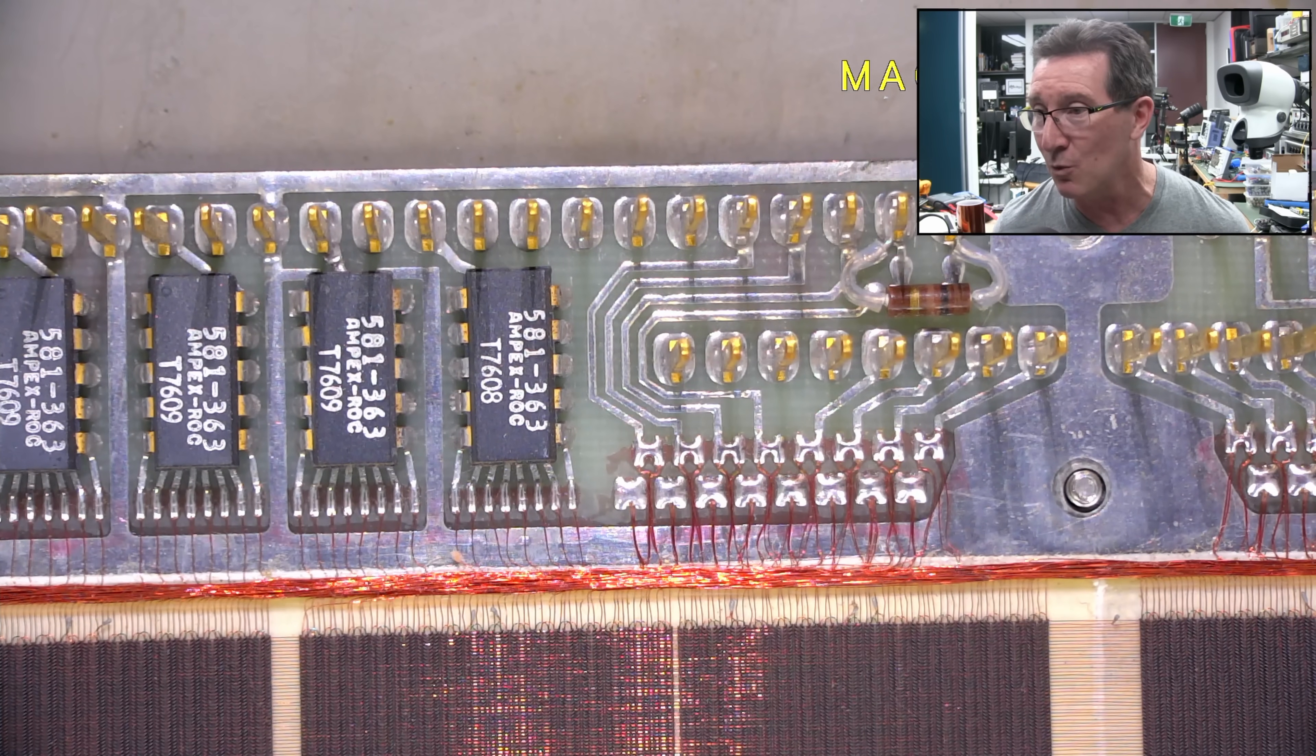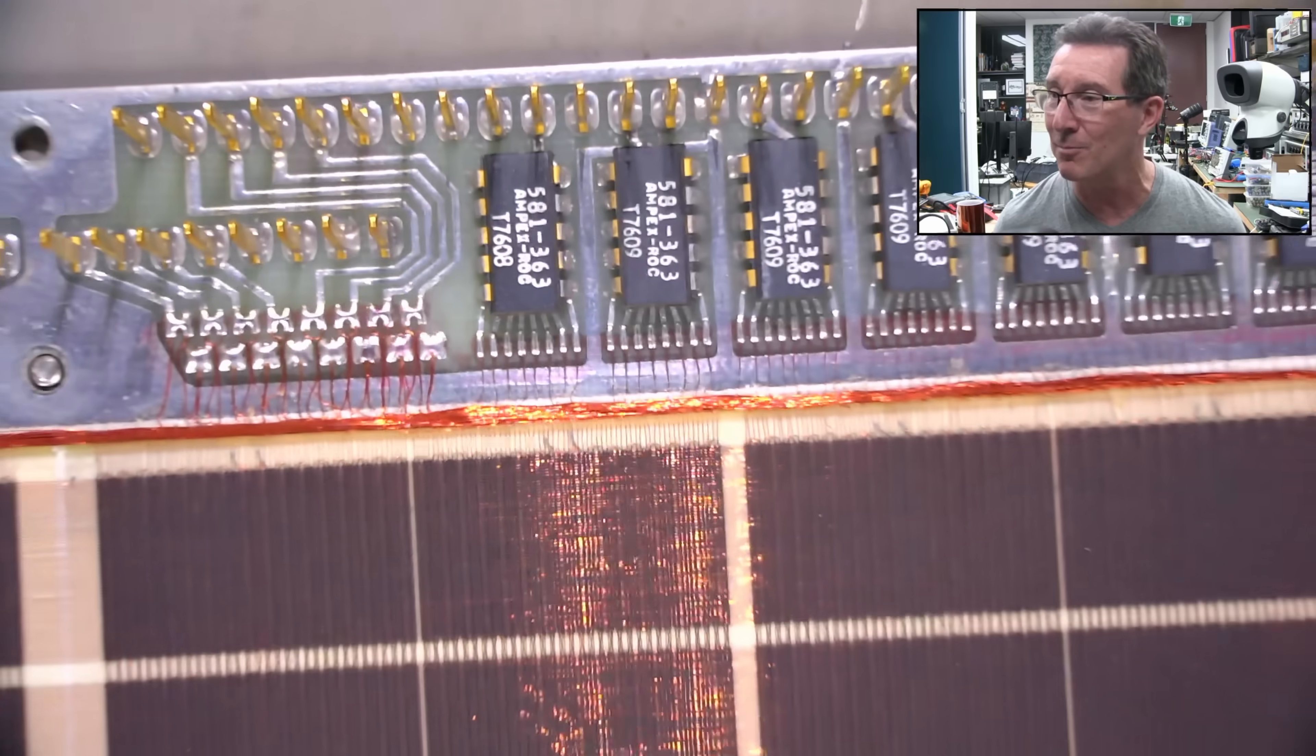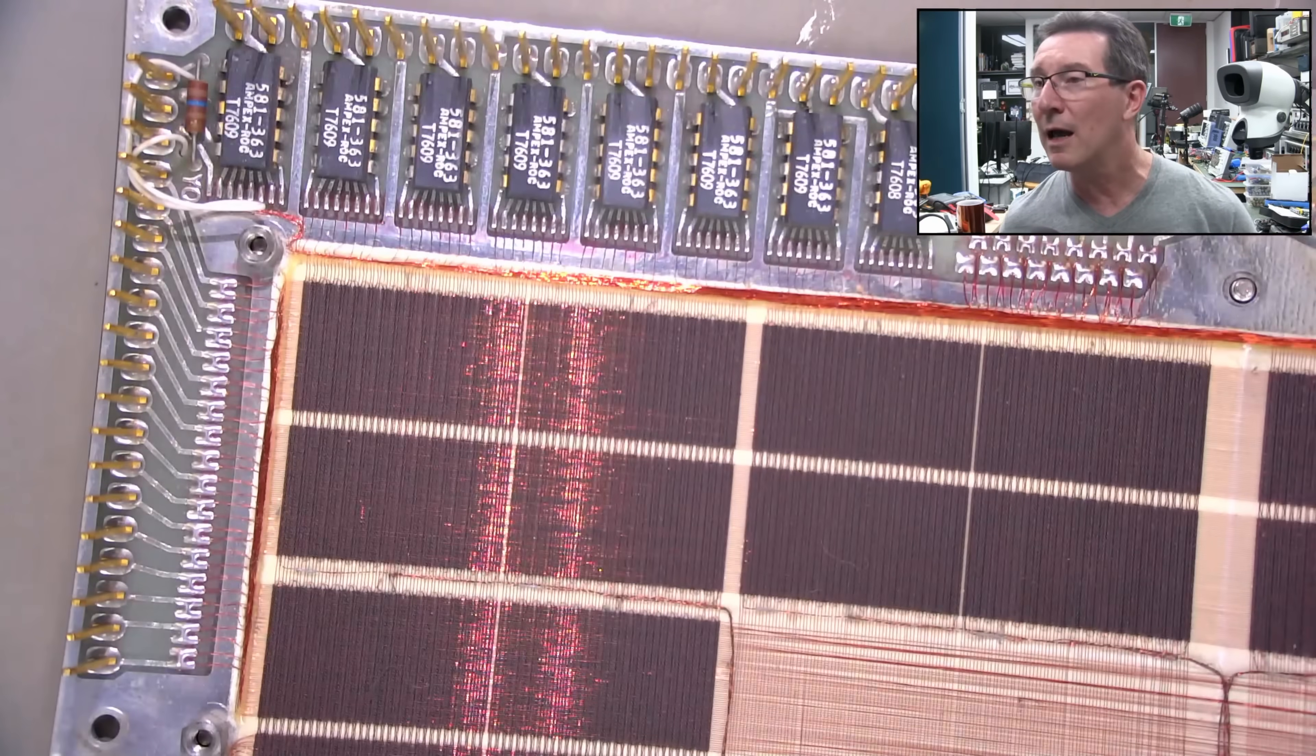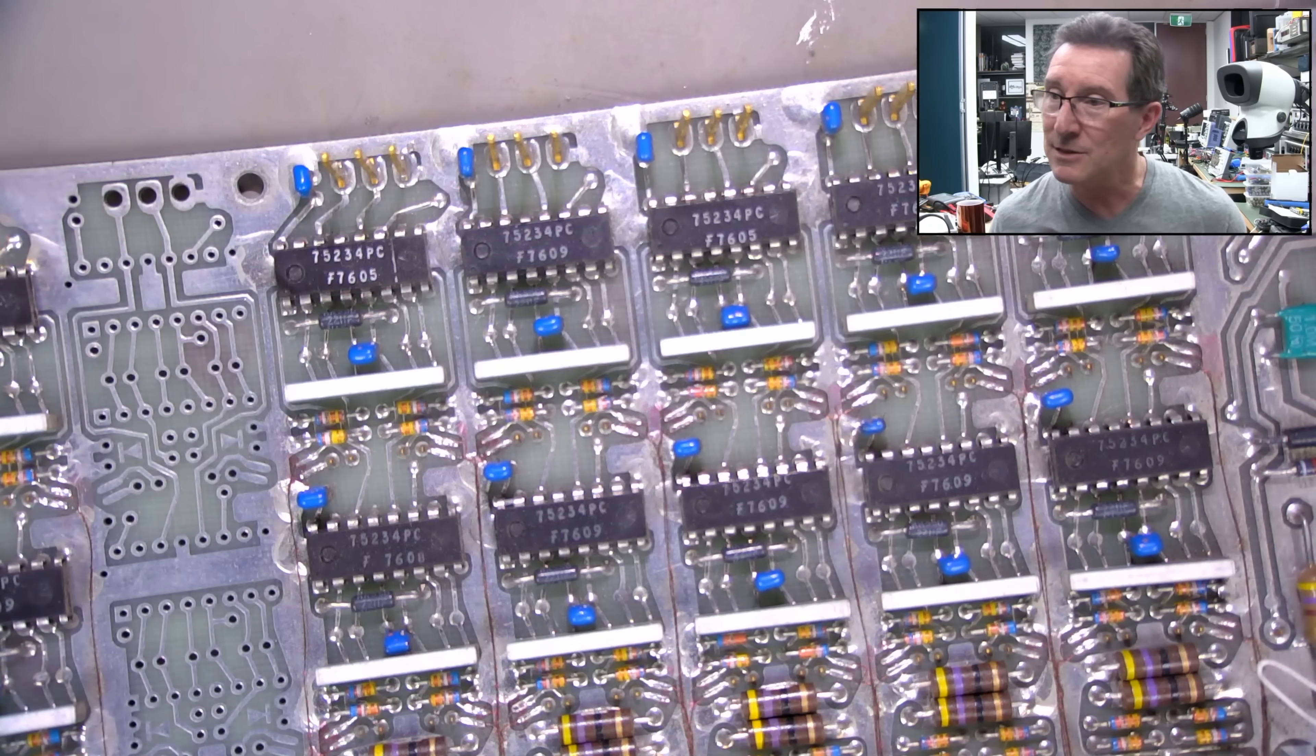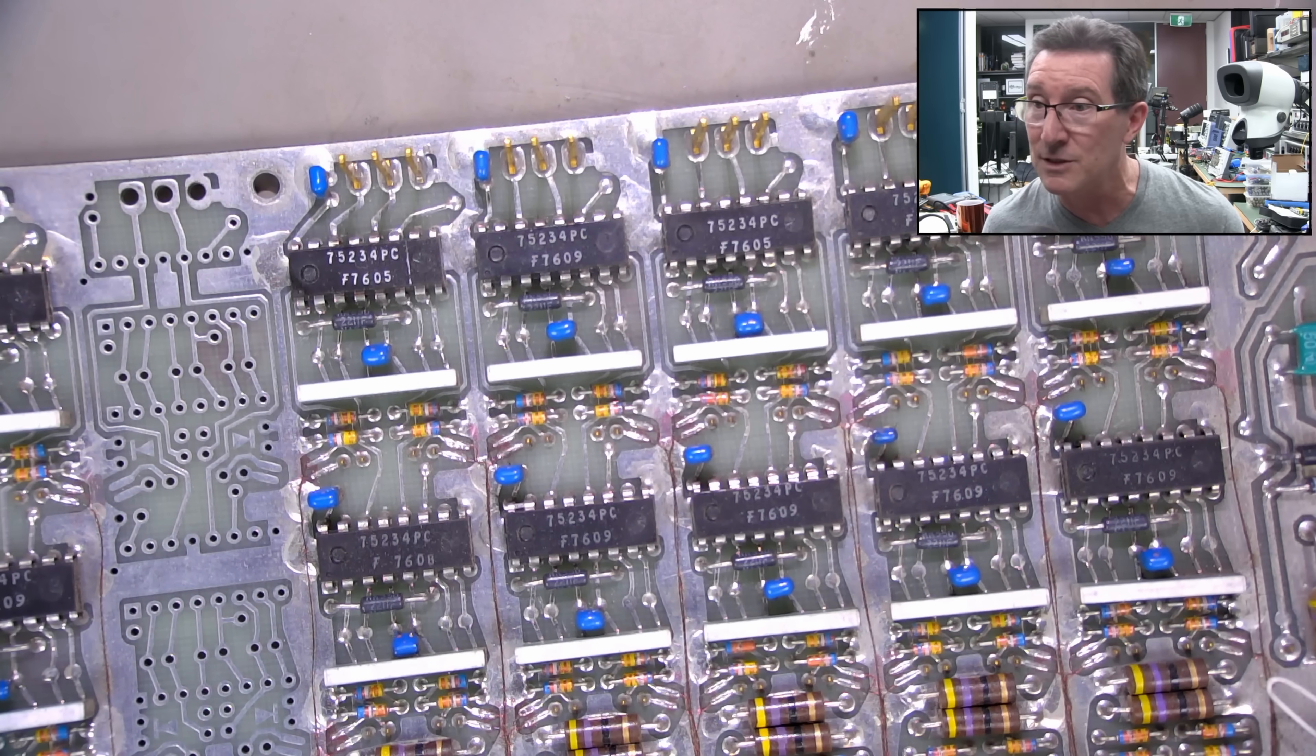These are Ampex. Those are X and Y drivers, they're Ampex jobbies. Good luck trying to find, I don't even think I'd bother searching for those, really. It looks like it's the same for both X and Y. Yes, the same jobbie. But those sense ones up the top, as I said, they would be the sense lines. So they're a Fairchild jobbie. Might be able to get those. 75234.